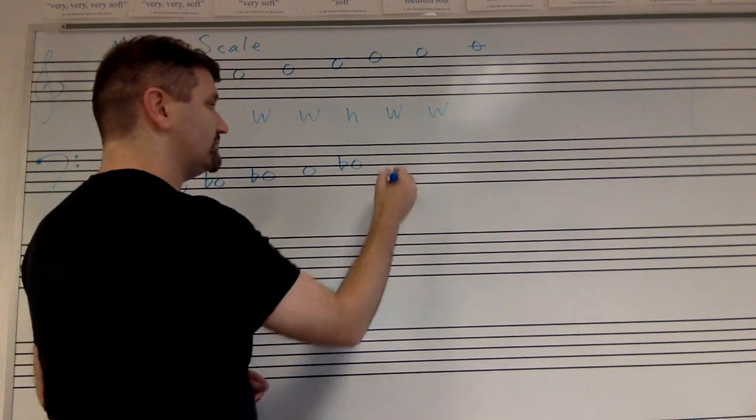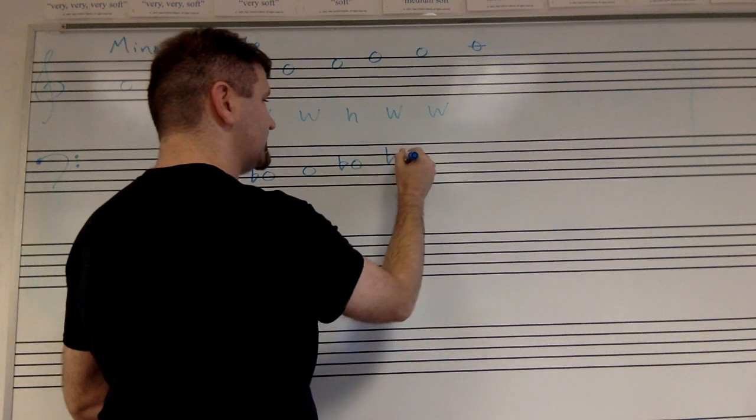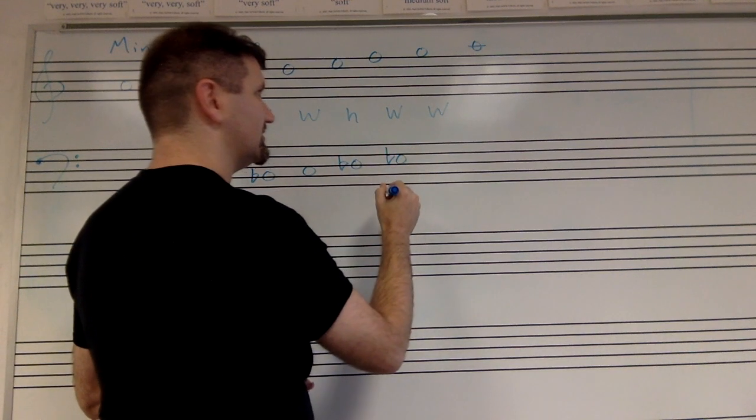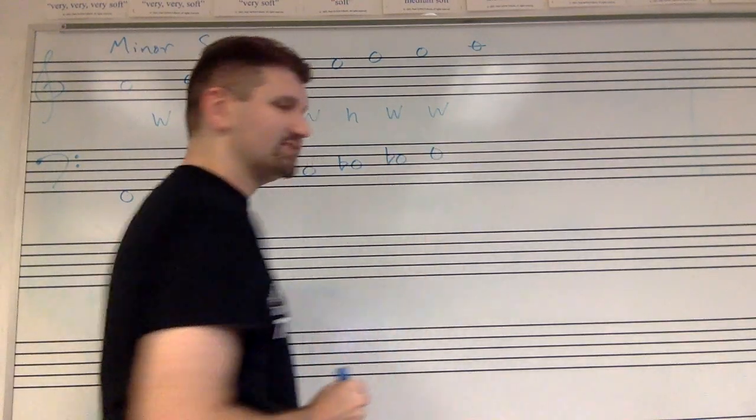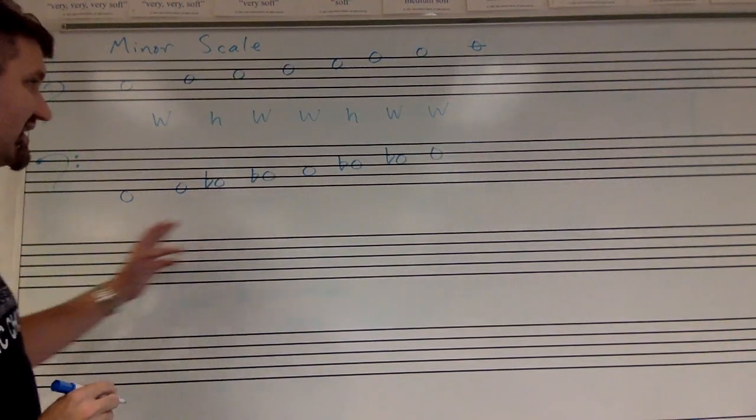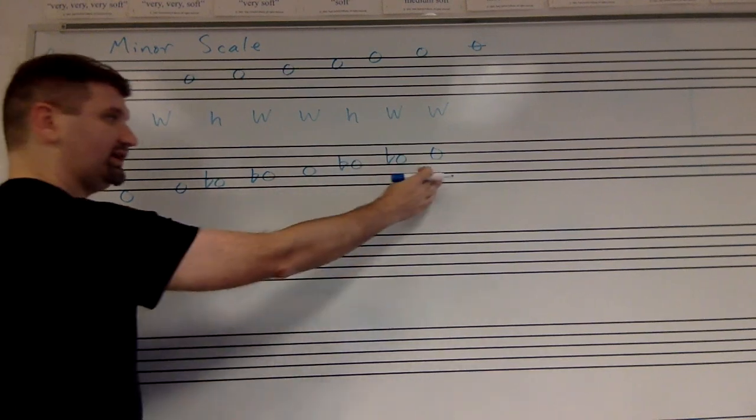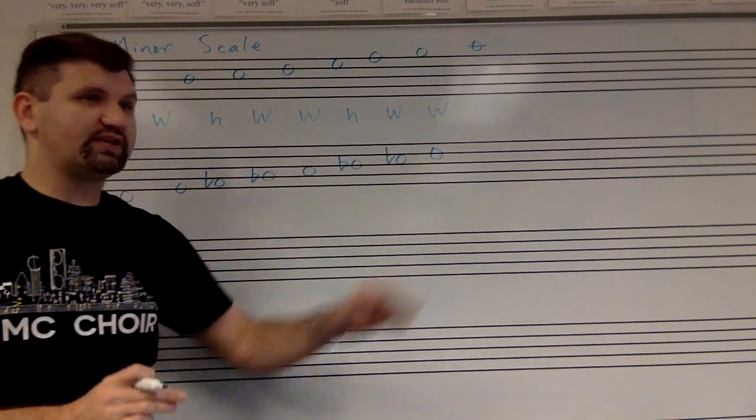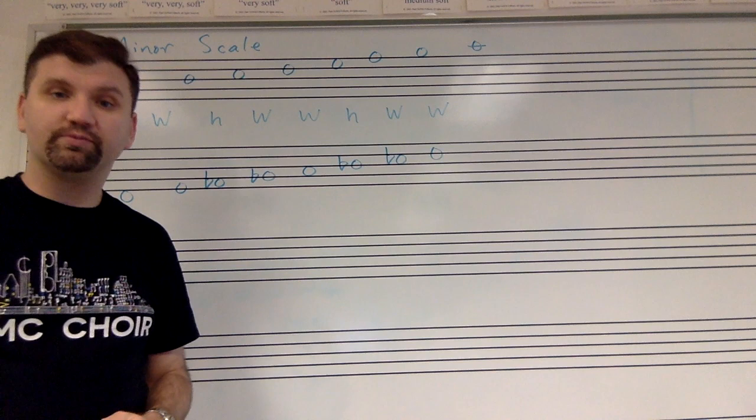Now a whole step from D flat gives us E flat, and a whole step from E flat gives us F. So we have seven unique pitches, and then we repeat the first pitch at the end, at an octave higher from where we started.